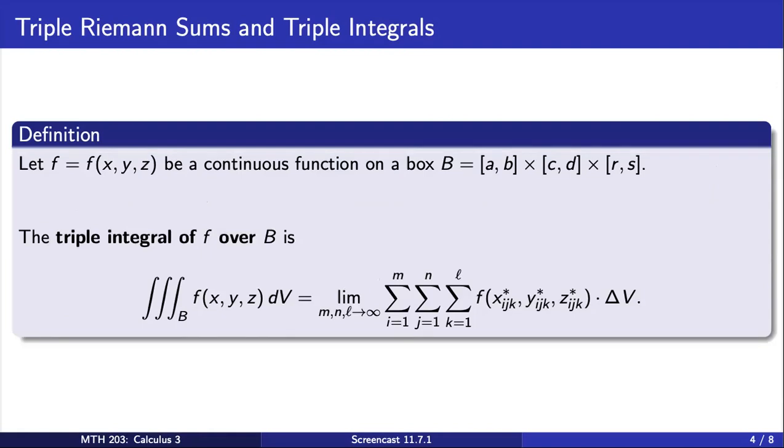The triple integral of f over capital B is then defined as the limit of this triple Riemann sum.